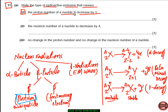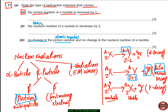So the first part asks: what decay causes the proton number to increase by 1? That is beta decay. The next part asks: what causes the nucleon number to decrease by 4? That is alpha decay. And no change in proton number or nucleon number? That is gamma decay. Note that proton number is also called atomic number, and nucleon number is also called mass number.